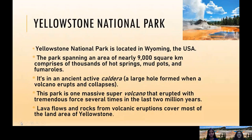Yellowstone National Park is located in Wyoming, the US. The park spans an area of nearly 9,000 square kilometres and comprises thousands of hot springs, mud pots and fumaroles. It sits in an ancient active caldera, which is a large hole formed when a volcano erupts and collapses. This park is one massive supervolcano that erupted with tremendous force several times in the last two million years. Lava floors and rocks from volcanic eruptions cover most of the land area of Yellowstone.